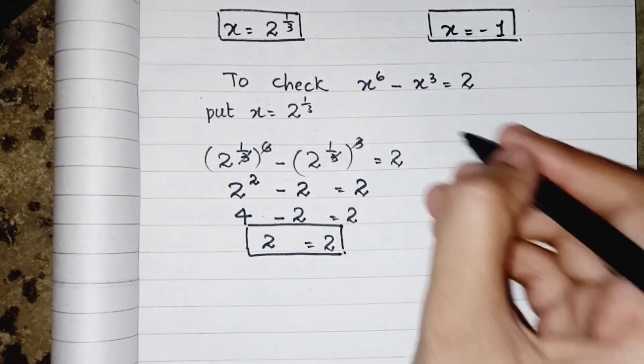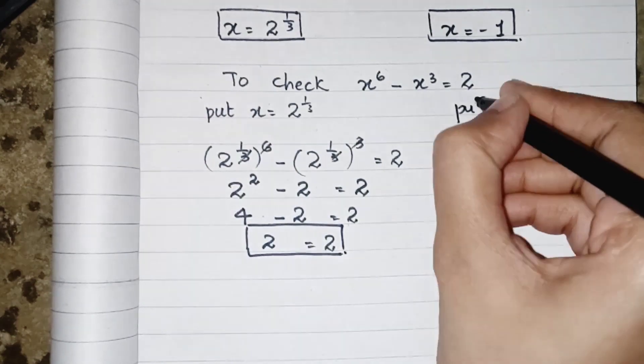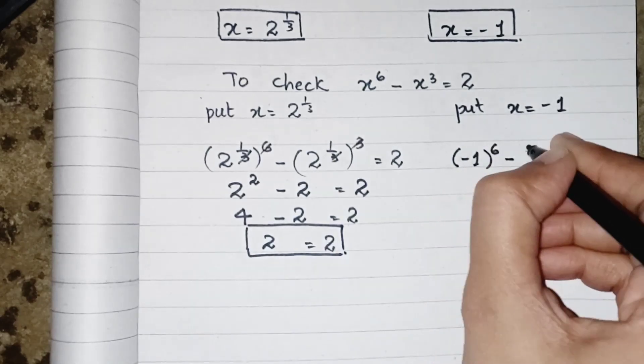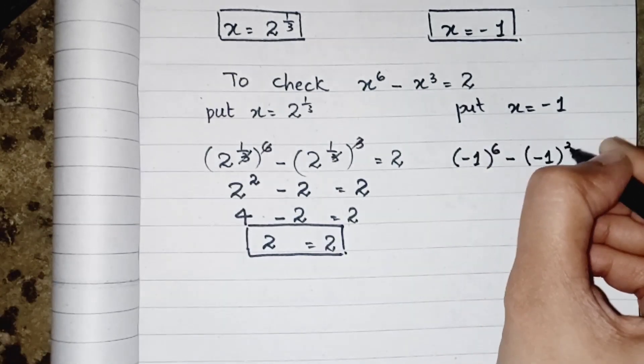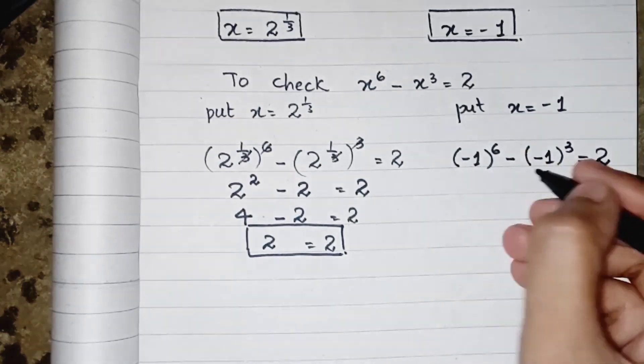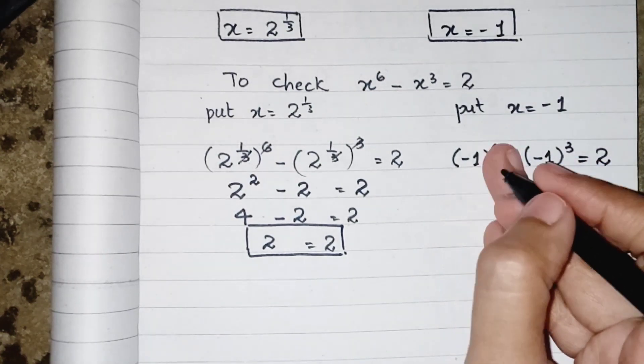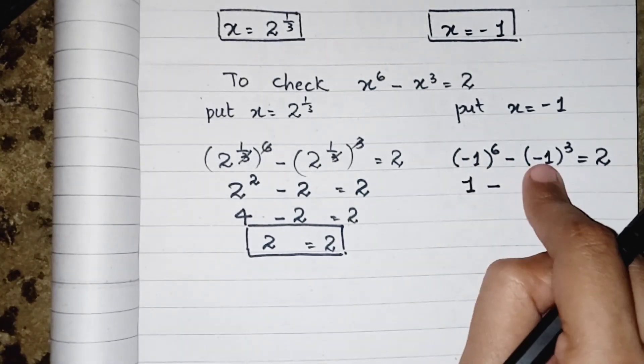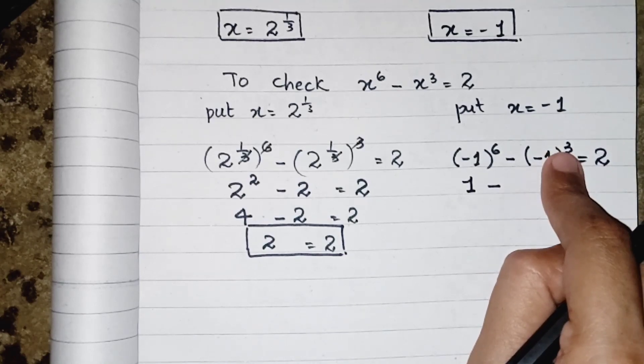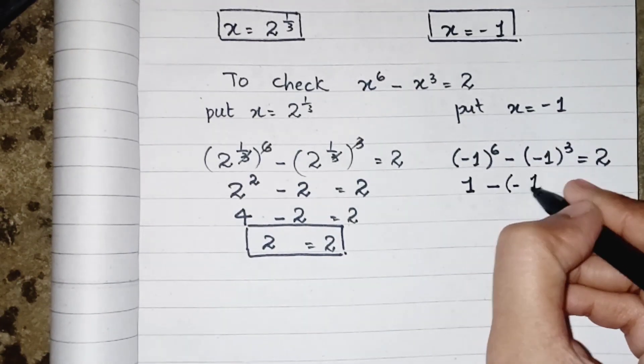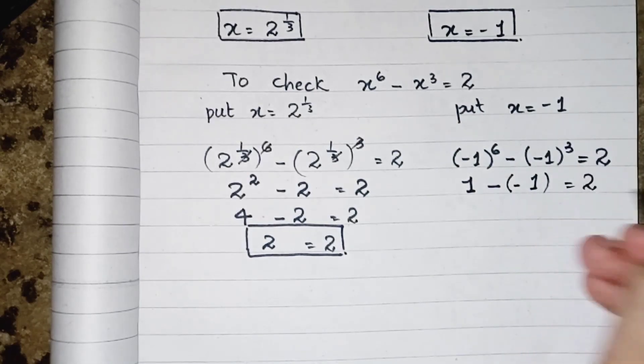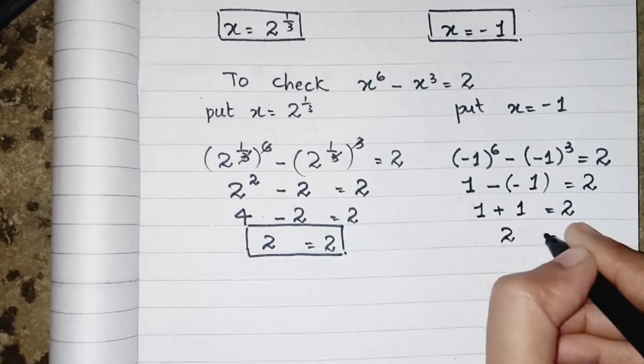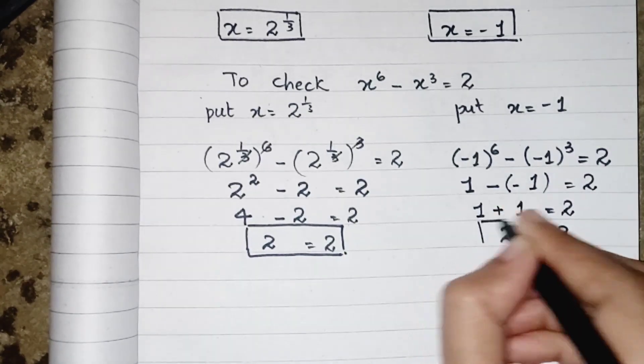Now we also put x equals to minus 1. minus 1's power 6 minus minus 1's power cube equals to 2. Whenever we have a negative base with an even power, it will give us a positive answer. And whenever we have negative base with an odd power, we will get the answer as negative. 1 minus minus 1 equals to 2. 1 plus 1 equals to 2.